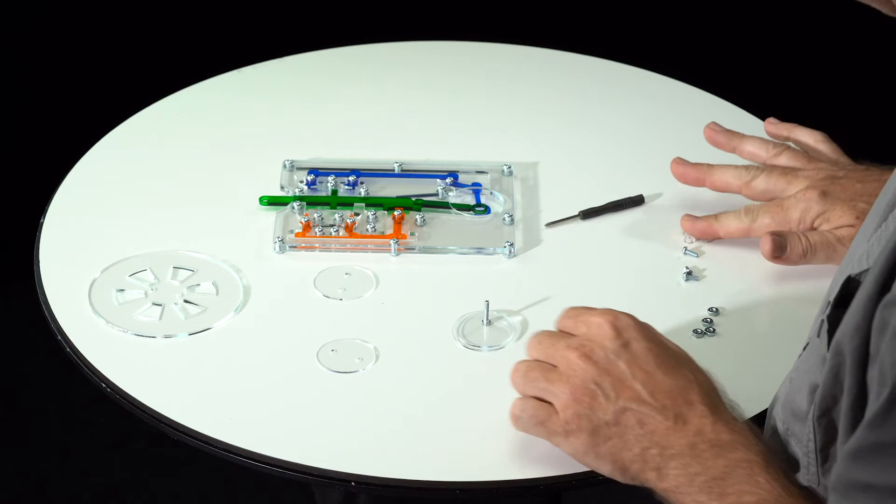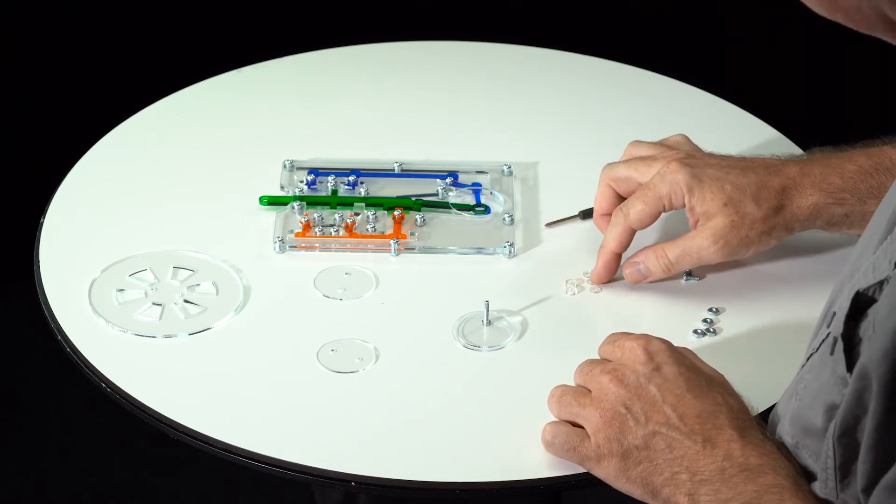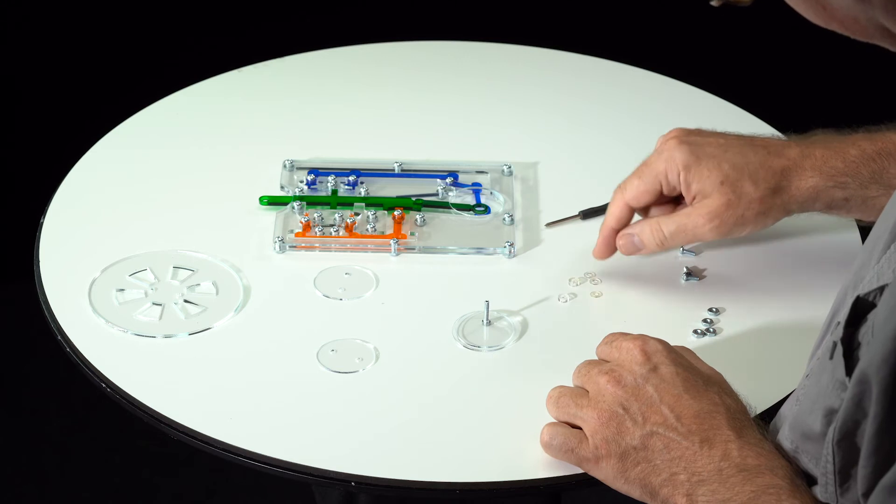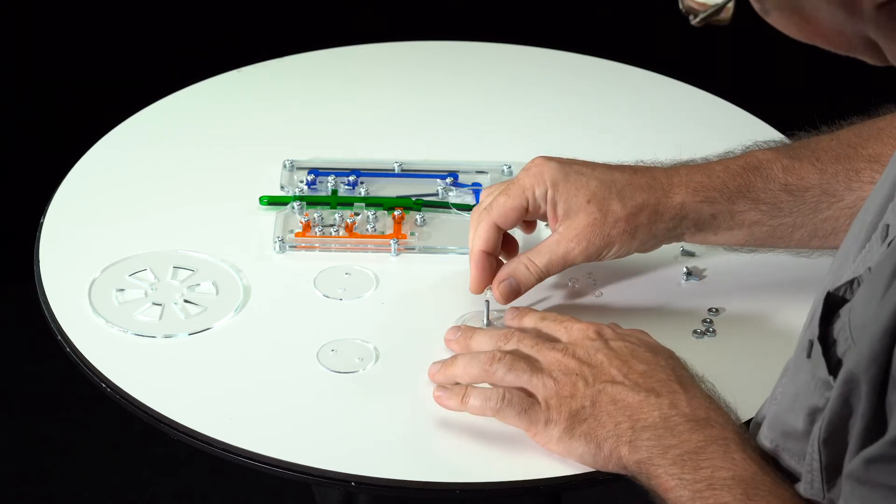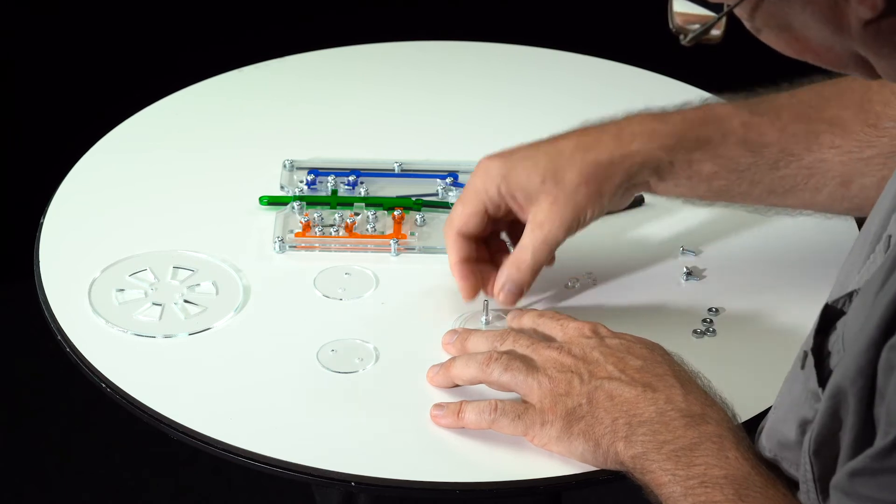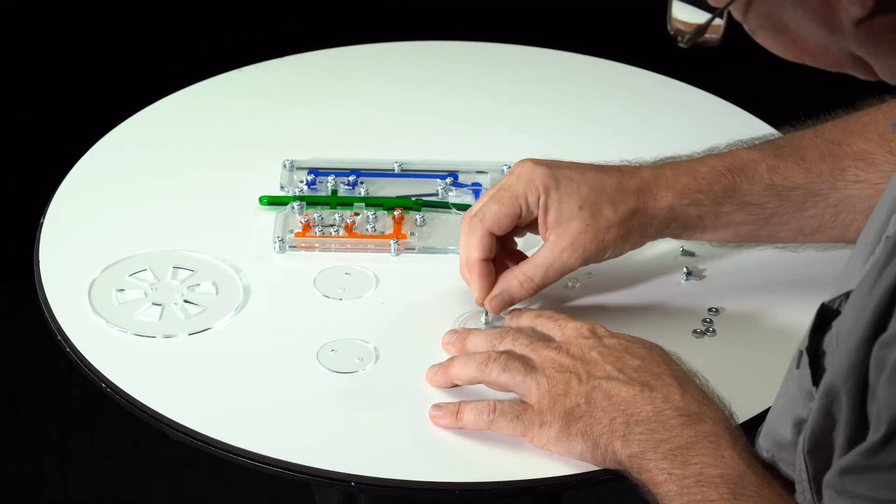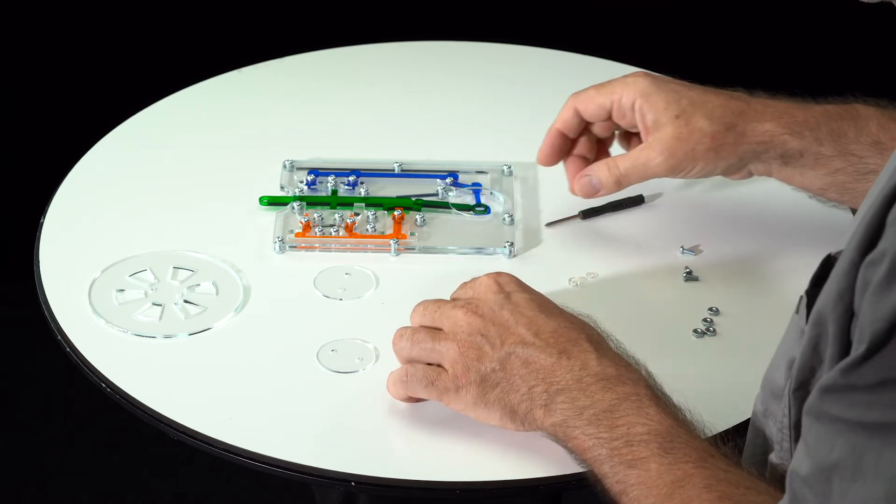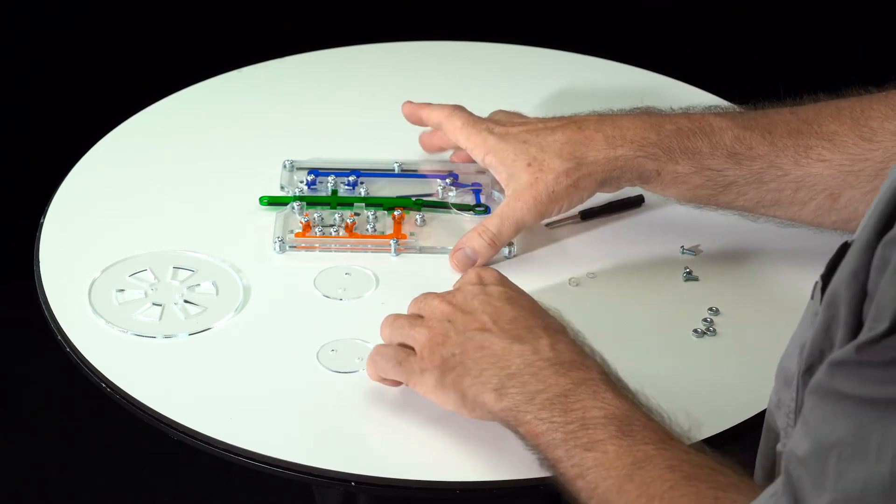And then there are these washers here. There's different thicknesses. There's these three millimeter thick, eighth inch thick washers, and there's very thin ones. Take one of the three millimeter ones, and two of the very thin ones, like that. And we give you an extra thin one or two because they're easy to lose.